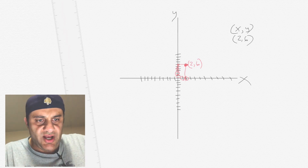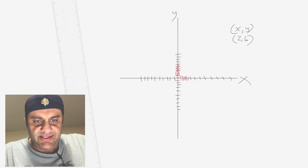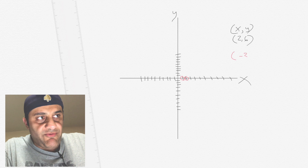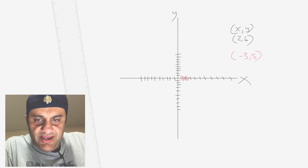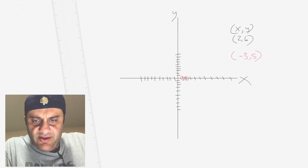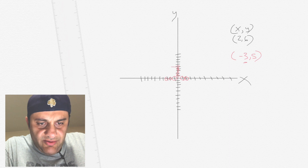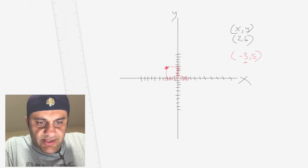Now let's try another point — negative 3, 5. So first on the x we go negative 1, negative 2, negative 3. And then we go up 5 on the y: 1, 2, 3, 4, 5. So that point, right there, is negative 3, 5.